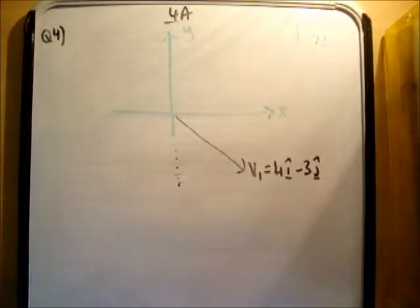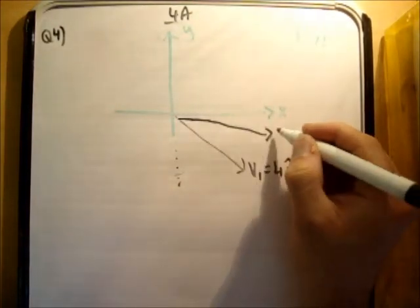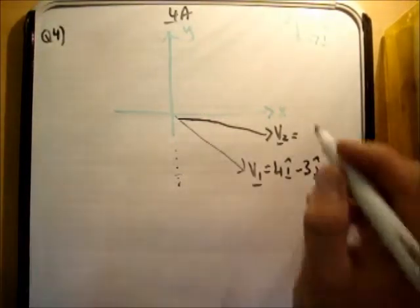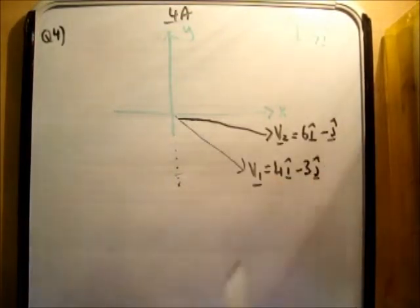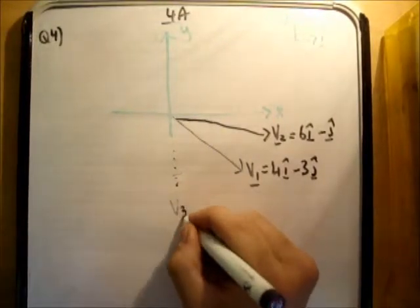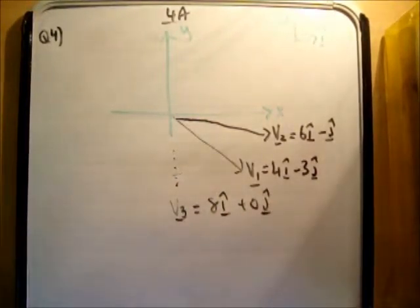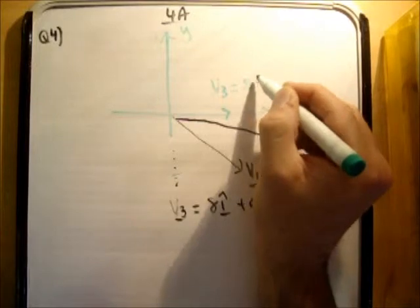So that's V1. Next, we're going to get V2. V2 is 6I hat minus J hat. So this guy is also in the fourth quadrant. I'm going to draw him here. Their vectors is equal to 6I hat minus J hat. So 6I hat minus J hat is 6I hat minus 1 times J hat. And finally, we get V3 is equal to 8I hat plus 0J hat. So this guy is pretty straightforward. He's just on the x-axis. So this is V3 is equal to 8I hat, like so.